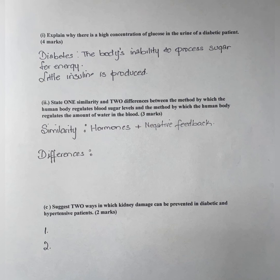Lastly, we need to suggest two ways kidney damage can be prevented in diabetic and hypertensive patients. The diabetic patient can reduce sugar intake on a daily basis to keep blood glucose at an optimum range, so that the kidney is not overworked in reabsorbing glucose. For the hypertensive patient, reduce sodium intake so that the parts of the nephron involved in reabsorbing ions are not overworked.